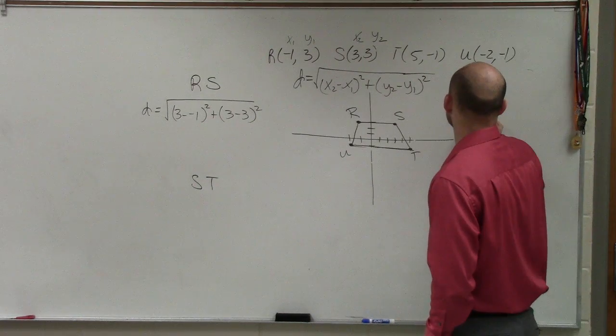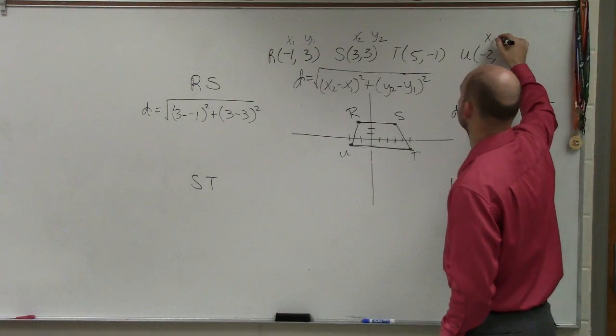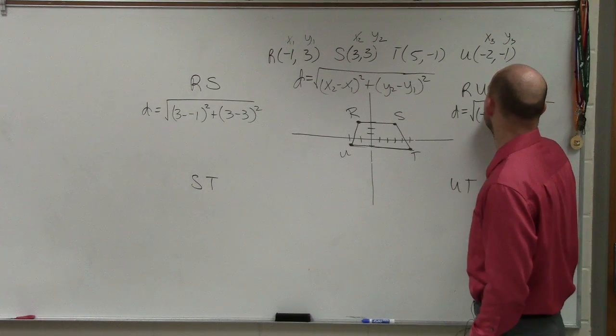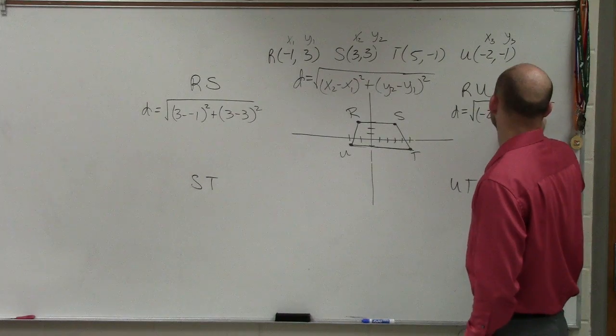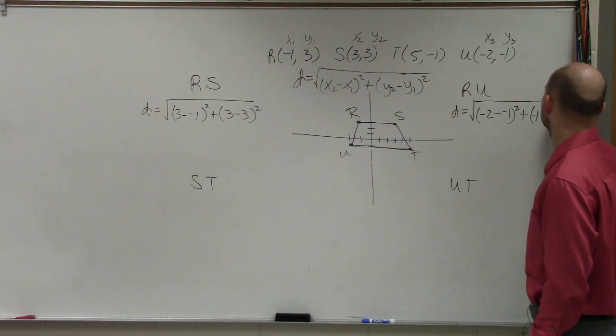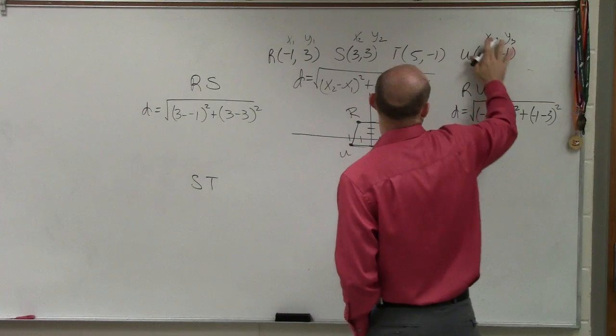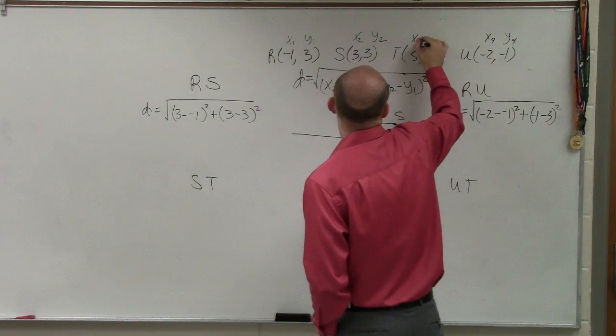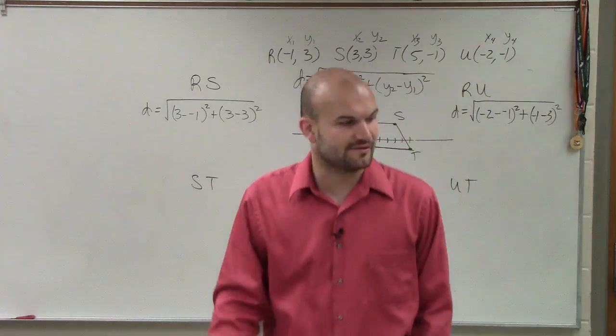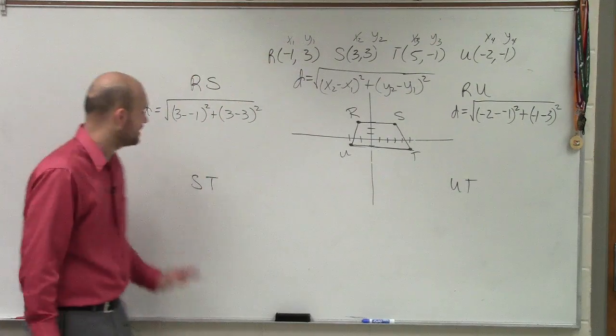To do RU, distance equals, I'll do negative 2 minus a negative 1 squared plus negative 1 minus 3 squared. Now, ladies and gentlemen, I'm just plugging them in there as different points. It doesn't really matter how you label them. You could all label them x1 and y1 if you want to.